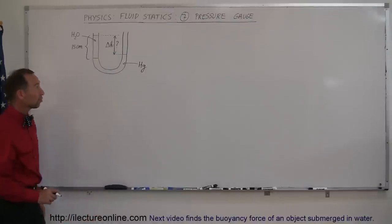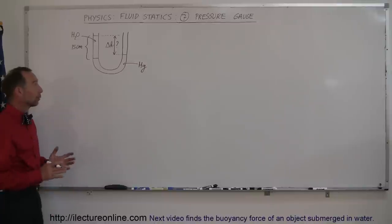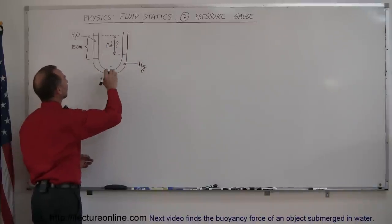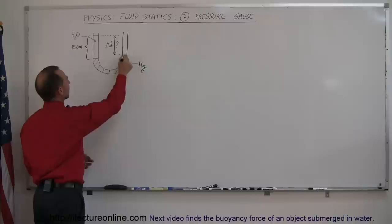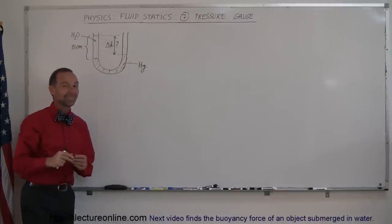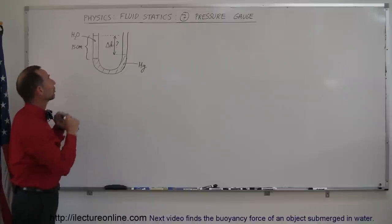Next we're going to look at the pressure gauge. What we're doing here is let's say we have a tube and we fill the tube with mercury. So this portion right here is mercury. And then on one side we pour water, and of course since water is less dense than mercury it will float on top of the mercury and push the mercury on one side of the tube a little bit higher.